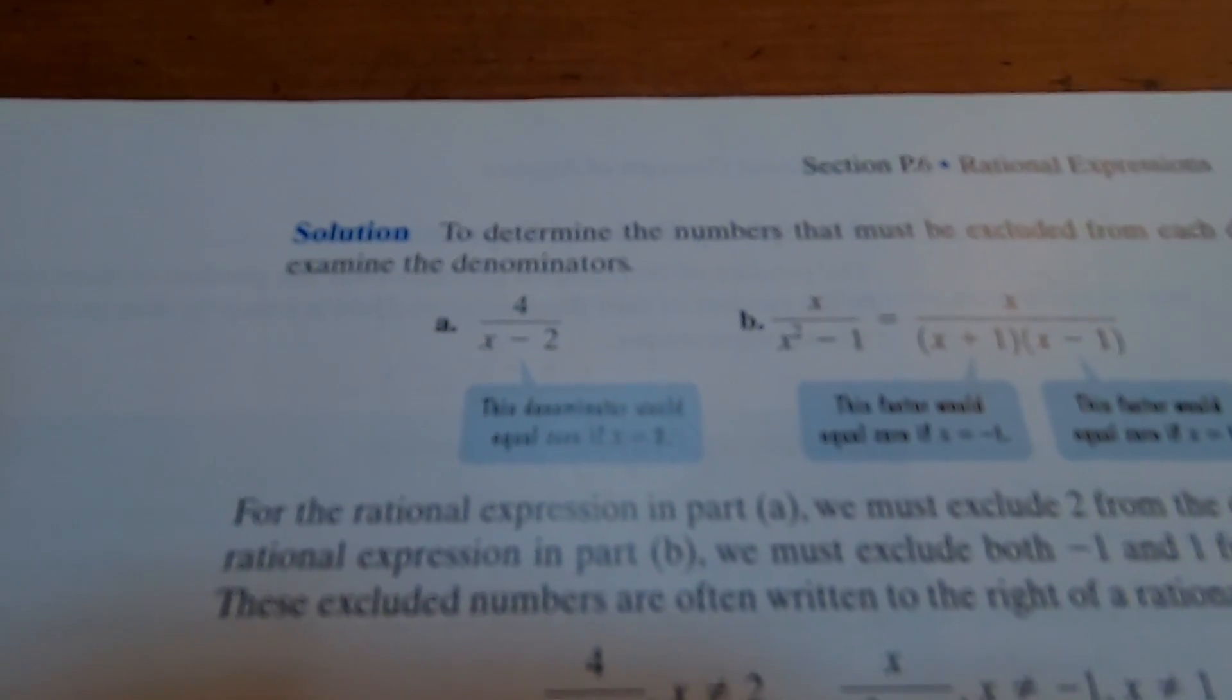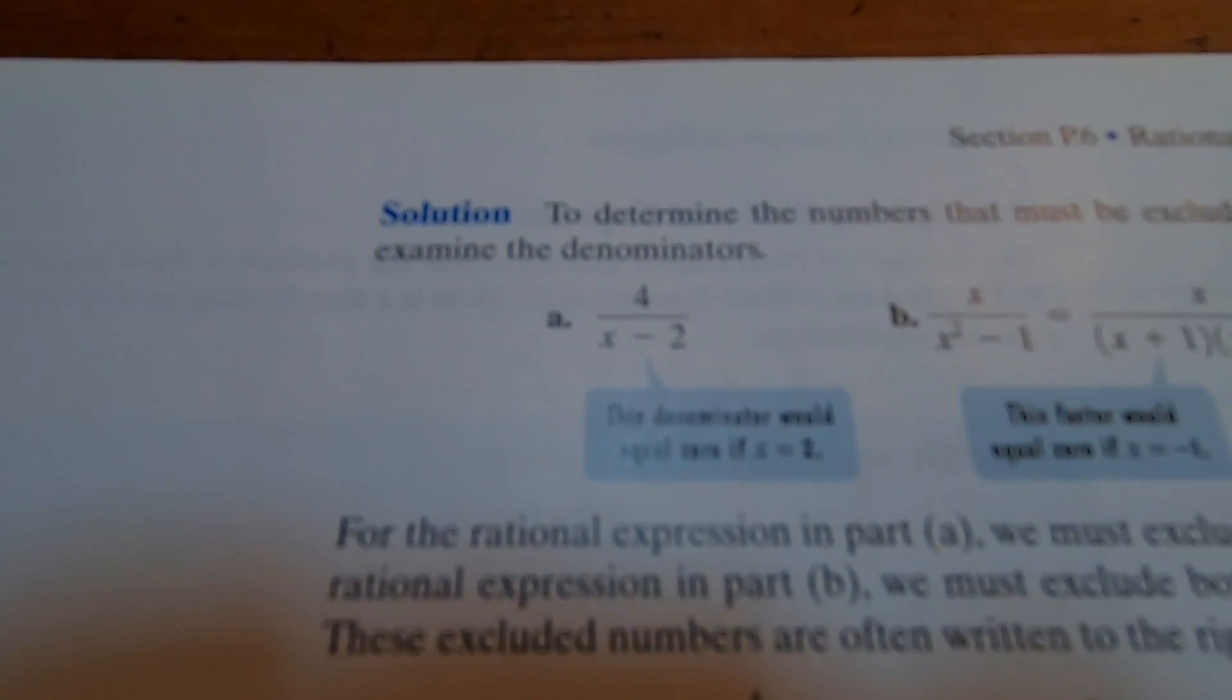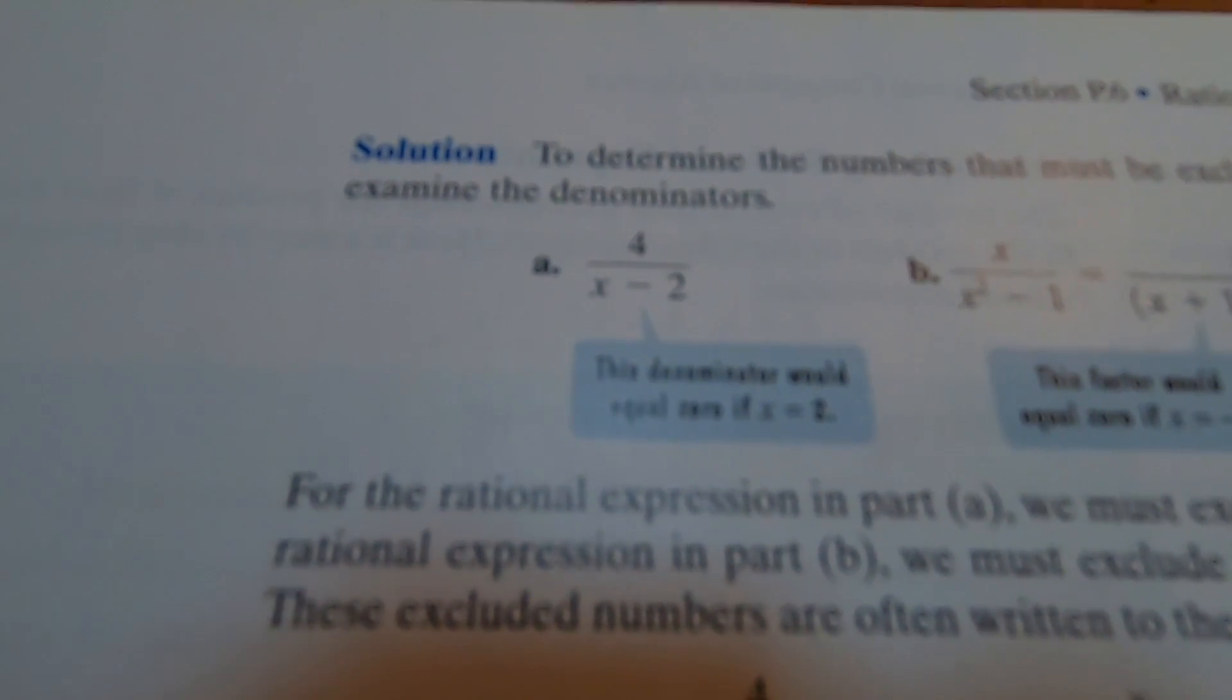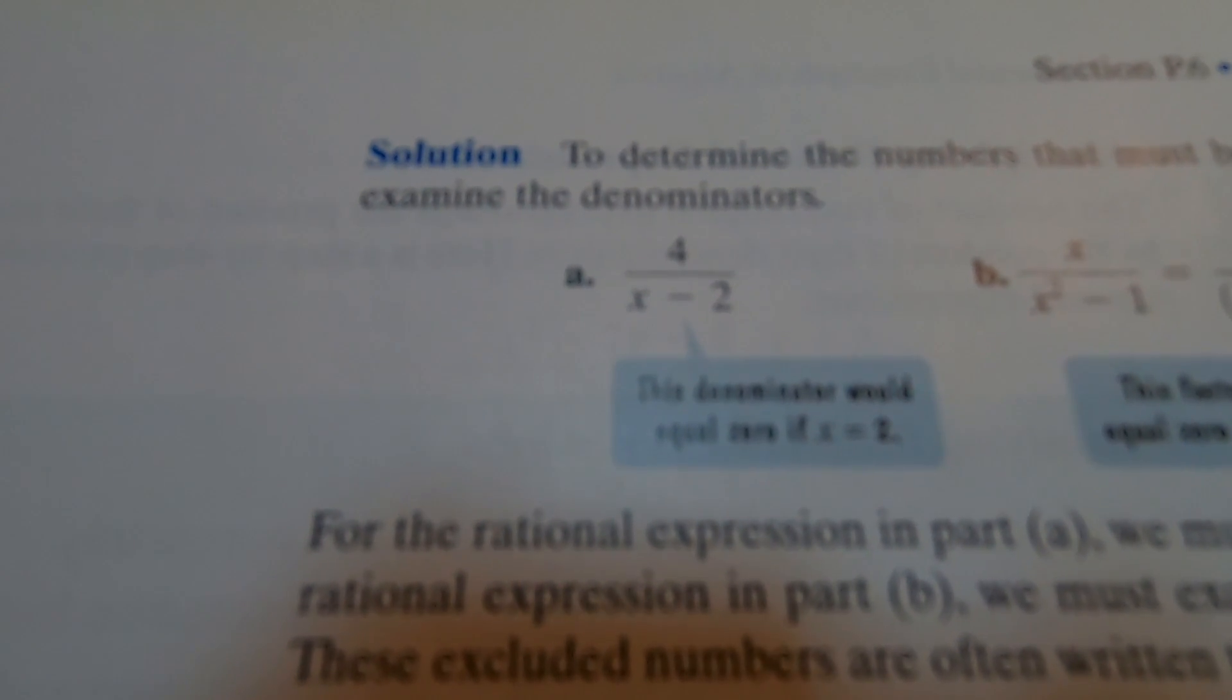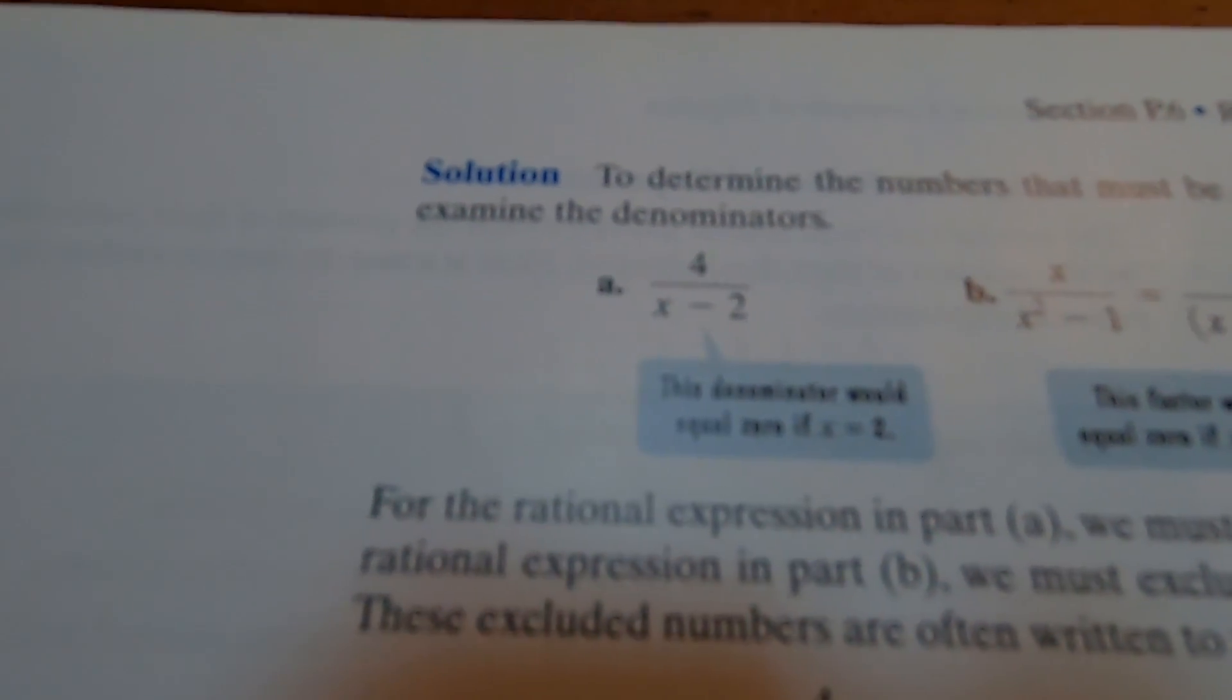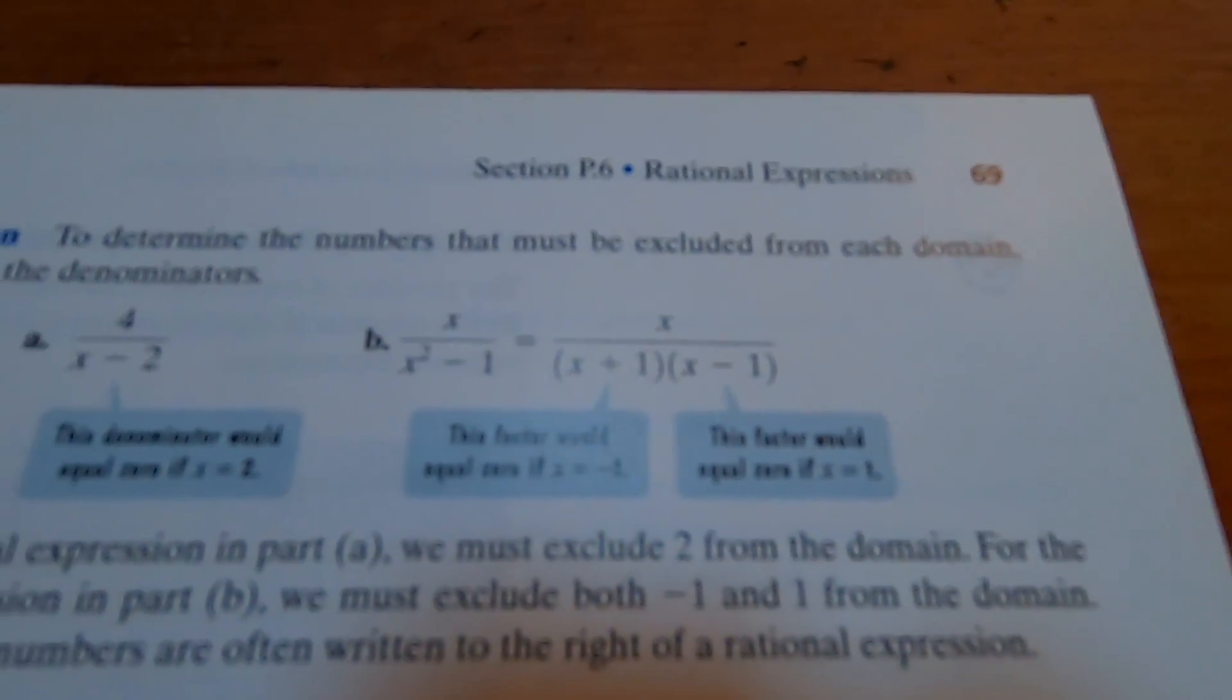Here's an example from the section on prereqs. The question is asking what numbers to exclude from the domain. And so basically it's got like a little arrow in a box and it points to the denominator and says the denominator would equal zero if x equals two. So that's what you exclude from the domain. So the domain of the function in part A is all numbers except two.